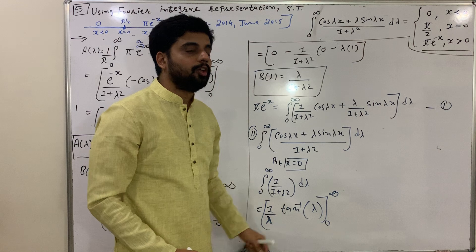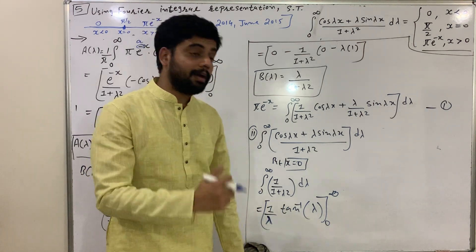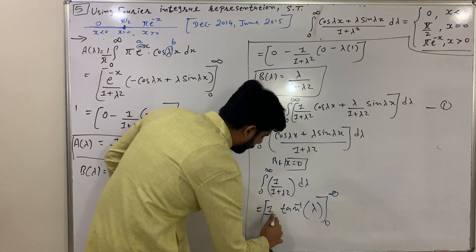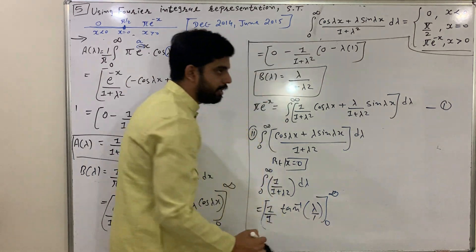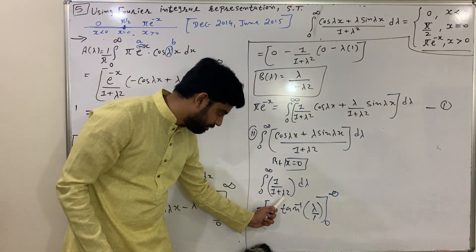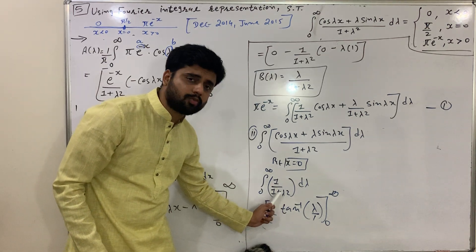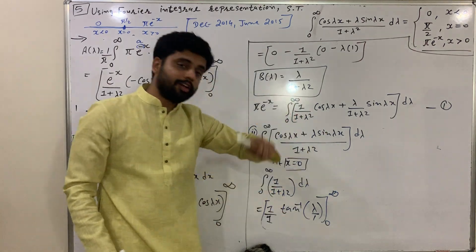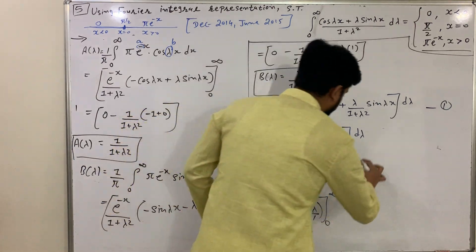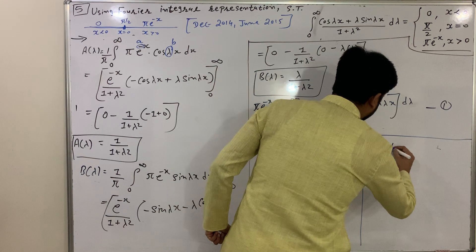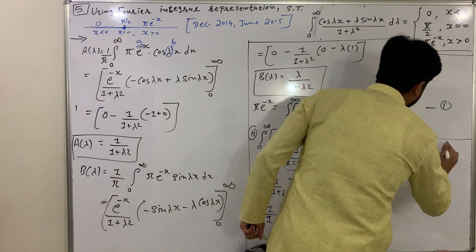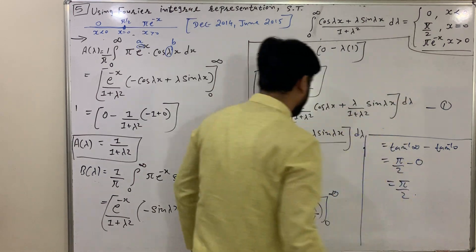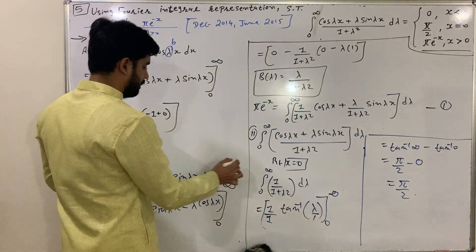We evaluate: integral from 0 to infinity of 1/(1 + λ²) dλ = [tan⁻¹(λ/1)] from 0 to infinity = tan⁻¹(∞) − tan⁻¹(0) = π/2 − 0 = π/2. This confirms the result: when x = 0, the integral equals π/2.